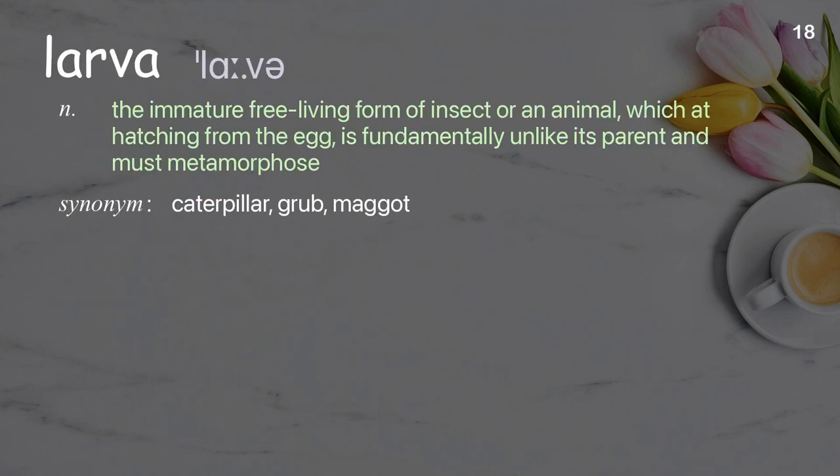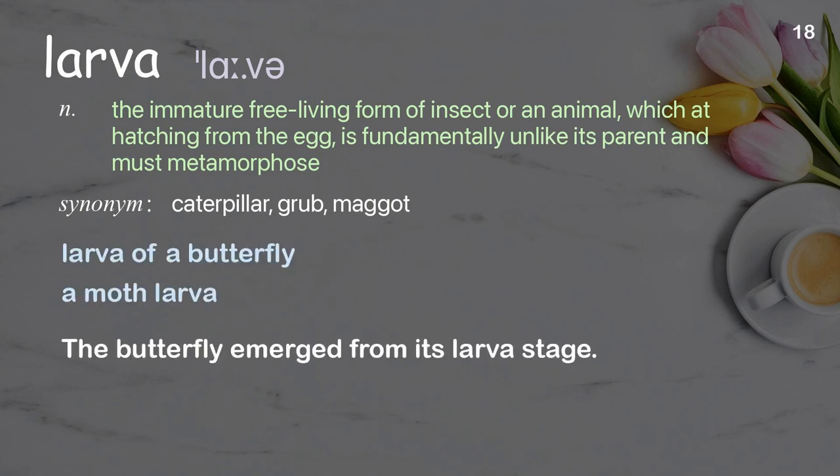Larva. The immature free-living form of an insect or an animal, which at hatching from the egg is fundamentally unlike its parent and must metamorphose. Examples: Larva of a butterfly, a moth larva. The butterfly emerged from its larva stage.